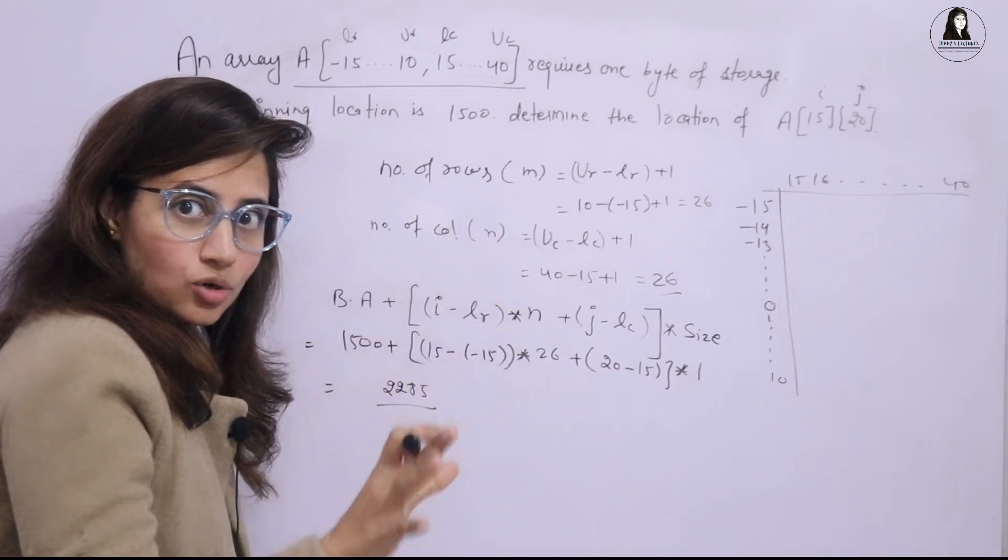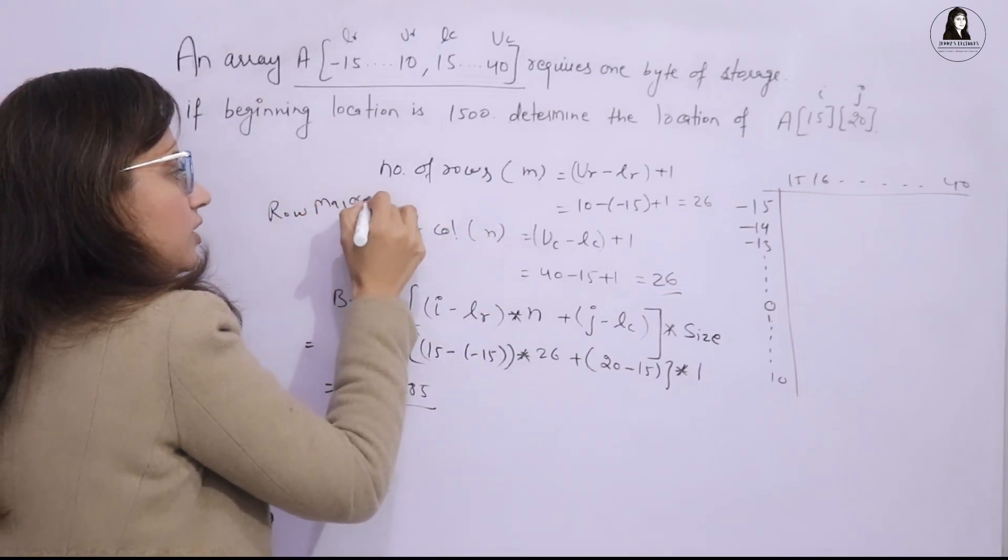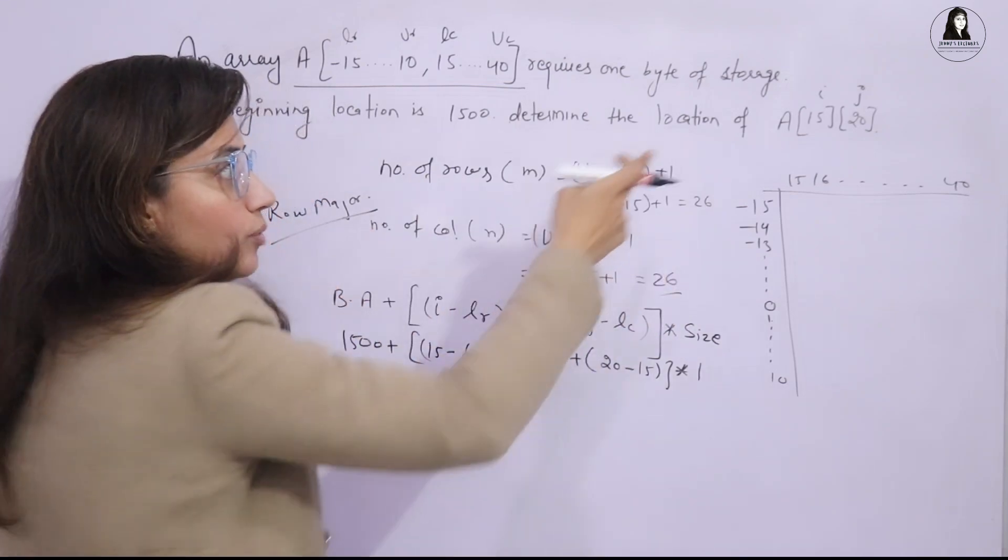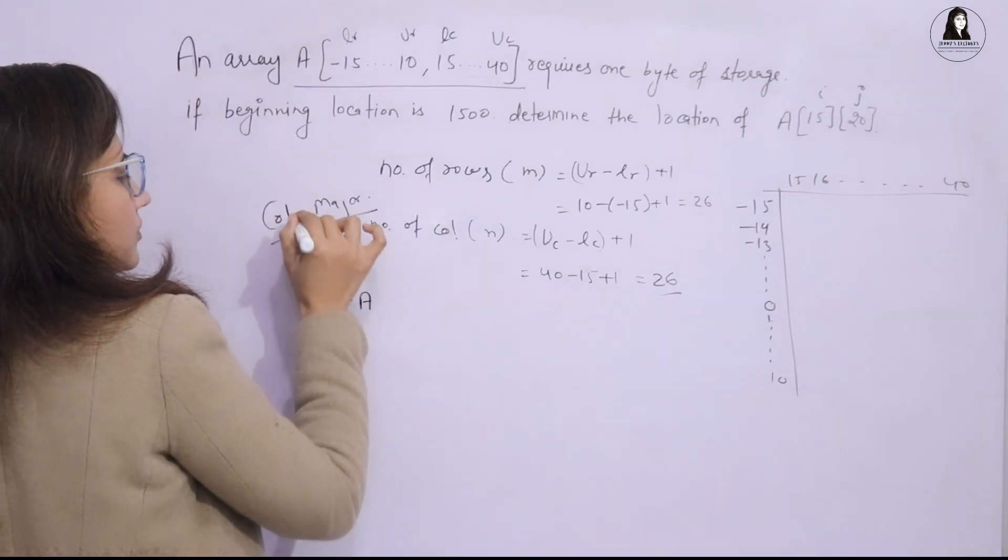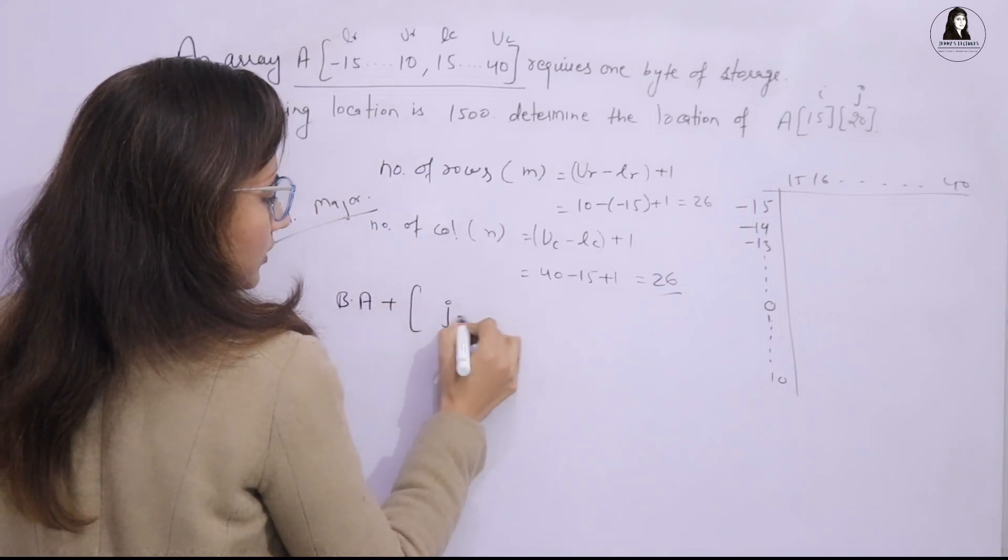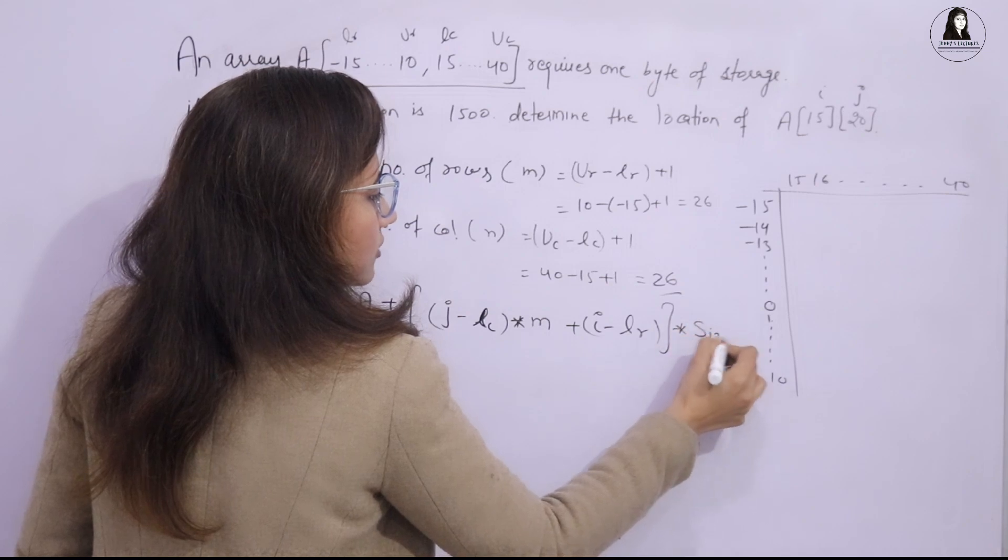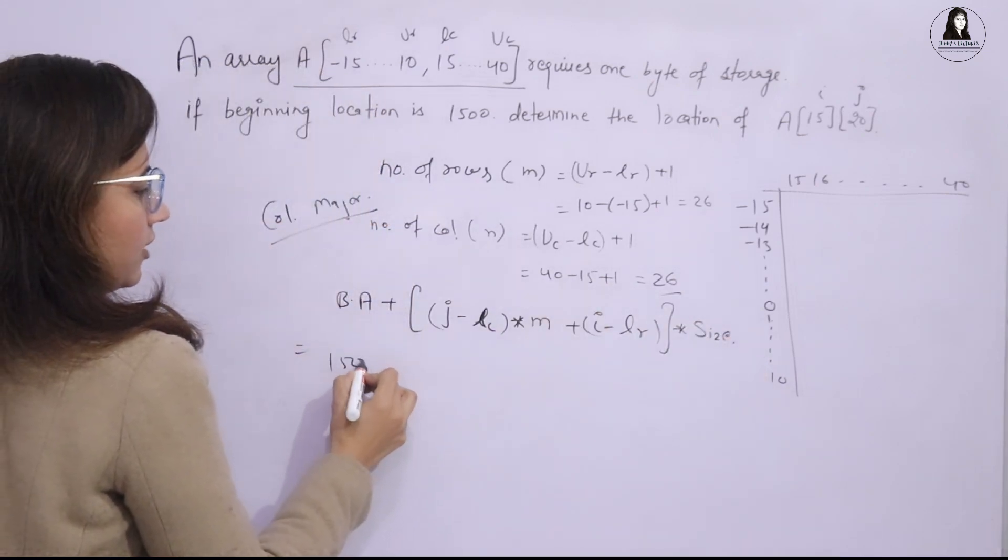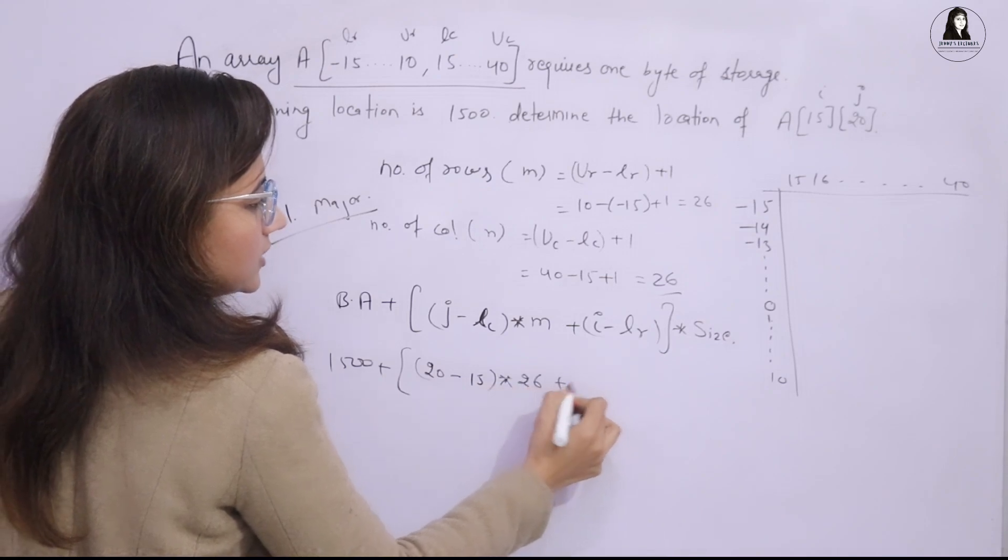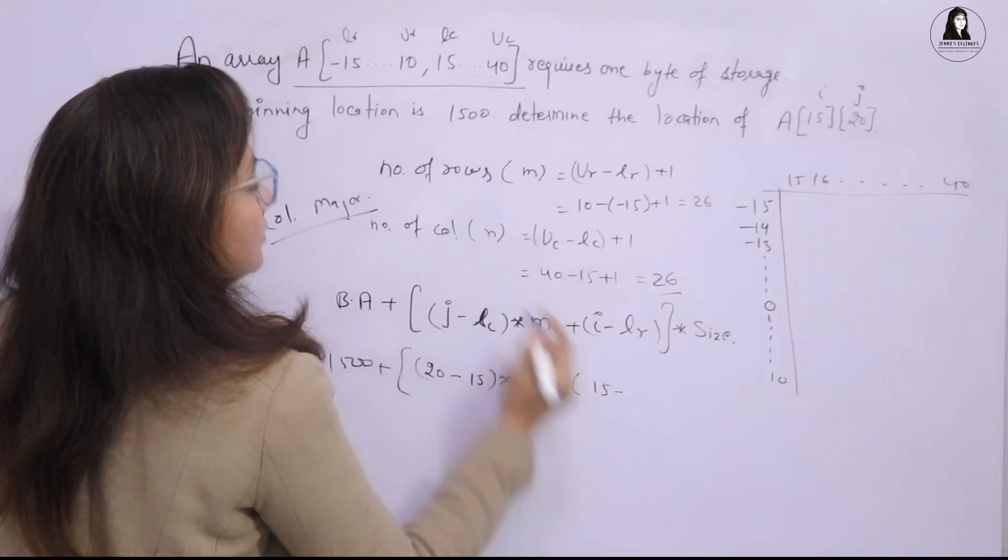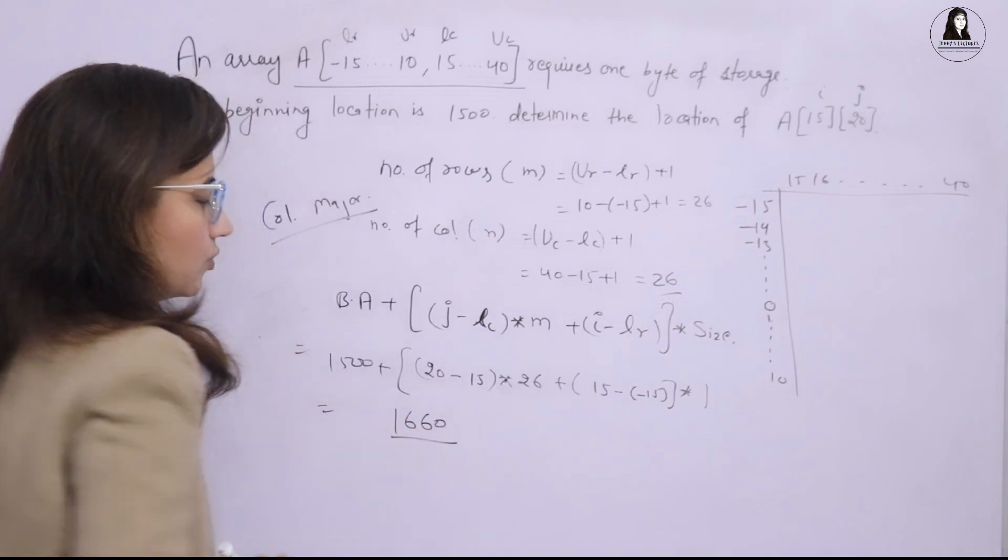Now, if you are watching this and you haven't done it yourself, please pause the video and calculate for column major. This was for row major representation. If this array is represented in memory in column major ordering, then what would be the address of A[15][20]? For column major, the formula is base address plus (J minus LC) times M plus (I minus LR) times size. Just put the values now: 1500 plus J value is 20 minus lower limit of column is 15, times M is 26, plus I is 15 minus LR minus 15, times 1. It would be 1660.